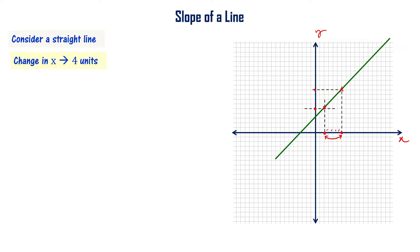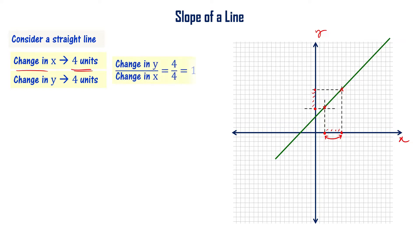That's why we said that change in x is 4 units. Similarly, change in y is 4. So change in y is also 4. Now if I take the ratio of these two, change in y divided by change in x, that is 4 by 4, that is equal to 1.